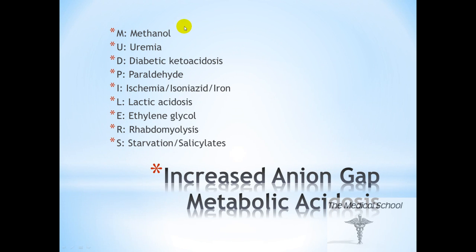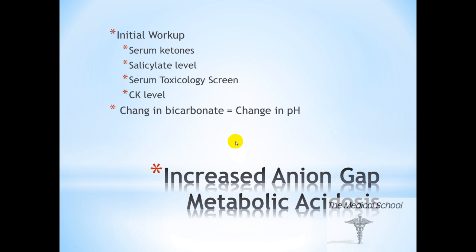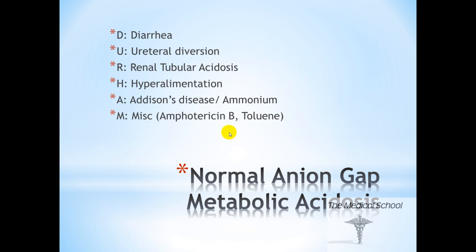The etiologies of an increased anion gap metabolic acidosis are described by the mnemonic MUDPILERS: 1. Methanol ingestion, 2. Uremia, 3. Diabetic ketoacidosis, 4. Paraldehyde, 5. Ischemia/isoniazid/iron ingestion, 6. Lactic acidosis, 7. Ethylene glycol, 8. Rhabdomyolysis, and Starvation versus salicylates. Whenever you have an increased anion gap metabolic acidosis, obtain serum ketones to rule out DKA, salicylate levels and serum tox screens to rule out toxins, and CK levels to rule out rhabdomyolysis. Note: whenever you have a primary disorder, the change in bicarbonate should equal the change in the pH.